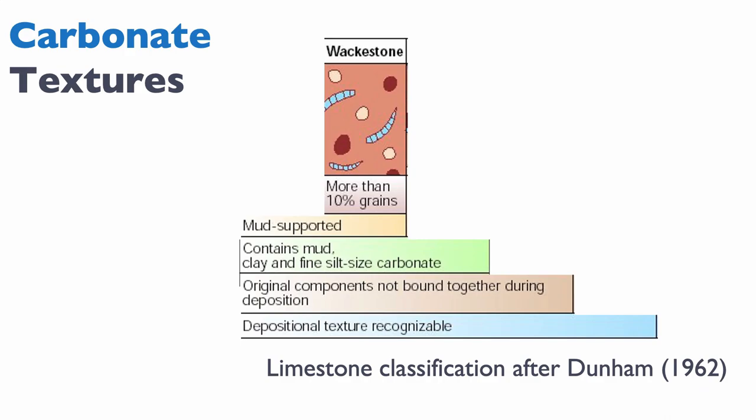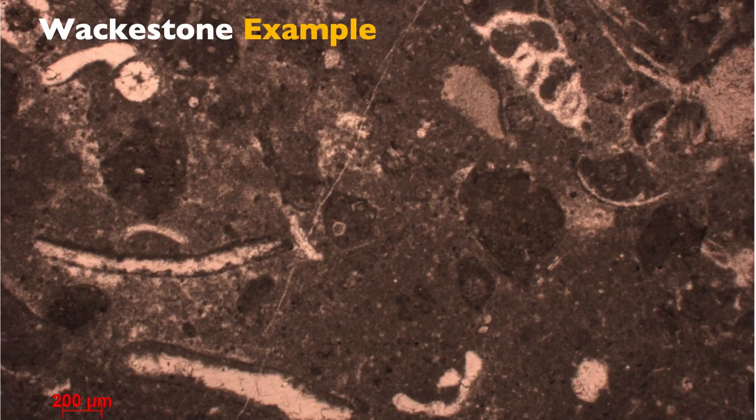But what if you have more than 10% grain? If you have more than 10% grain but you're still mud supported — notice the grains do not touch in the diagram — we call this rock a wackestone. Here's an example of a wackestone: you can see different skeletal components, definitely more than 10% skeletal content on this thin section, but there's mud in between the components, so this is a wackestone.